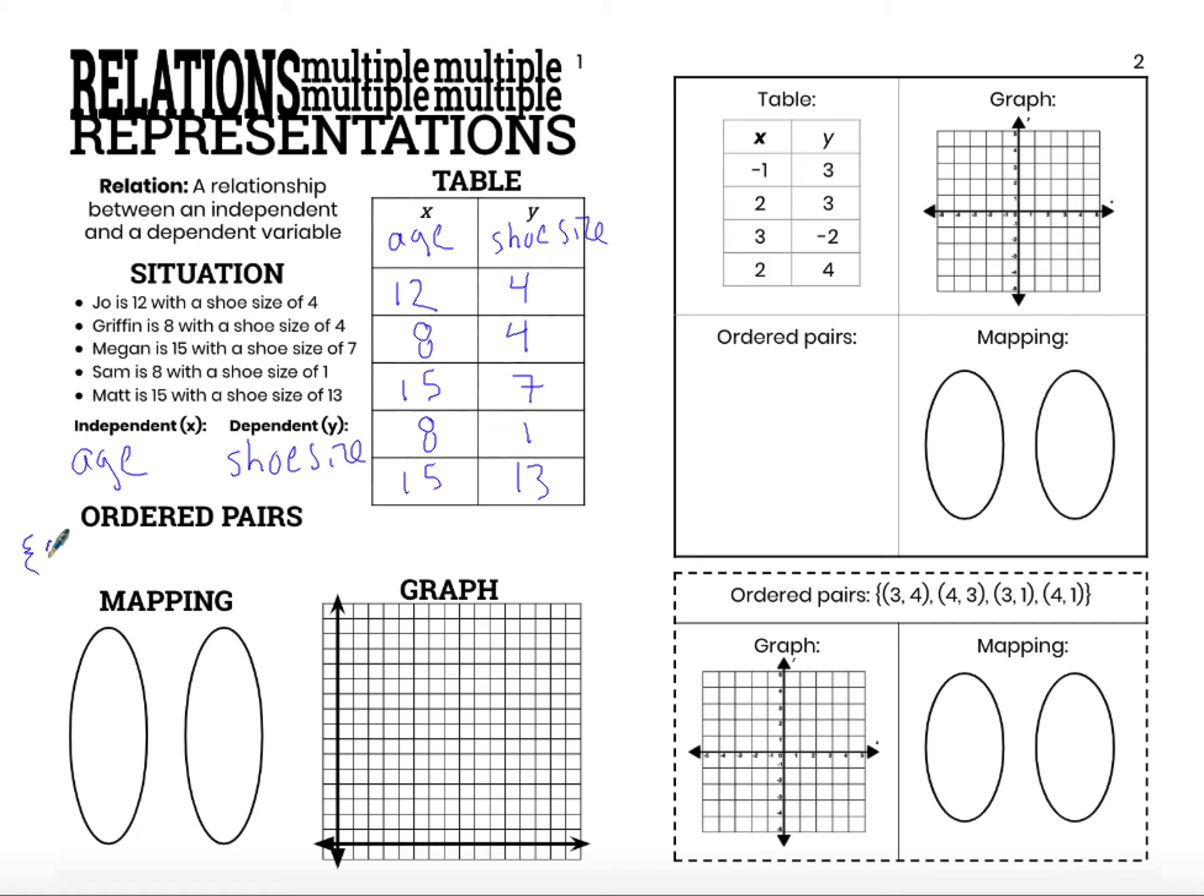We can represent this table just by listing each of the ordered pairs that are within that table. So X, 15, Y, 7. Each of these are X and Y pairings. Those are all of the possible ordered pairs within our relation. You can see I already went ahead and wrote that set notation. We need a beginning and an ending set notation.